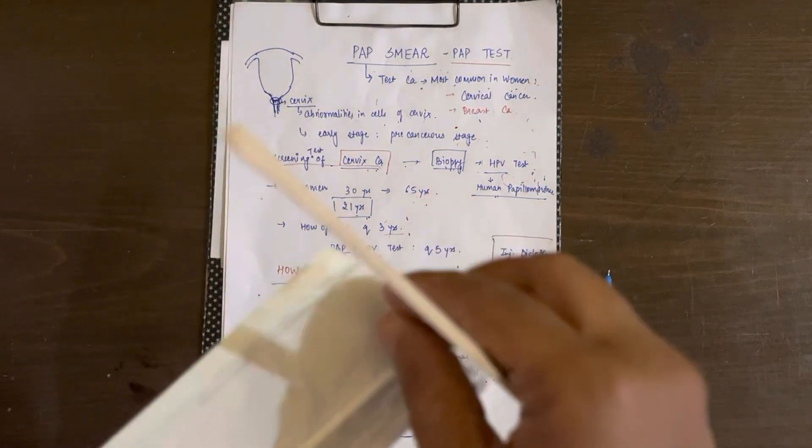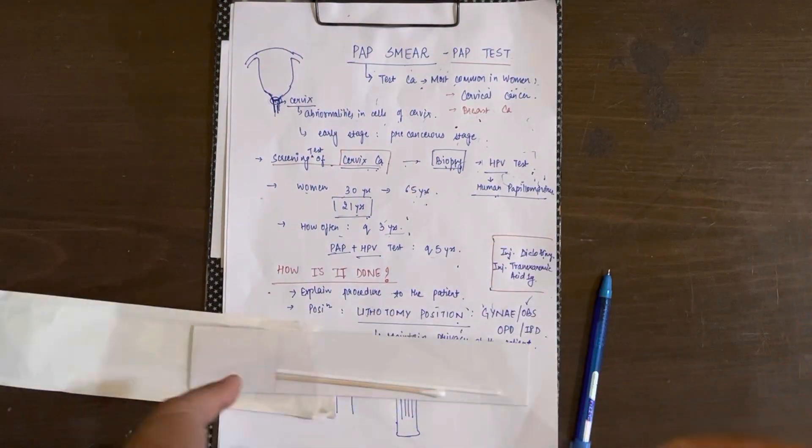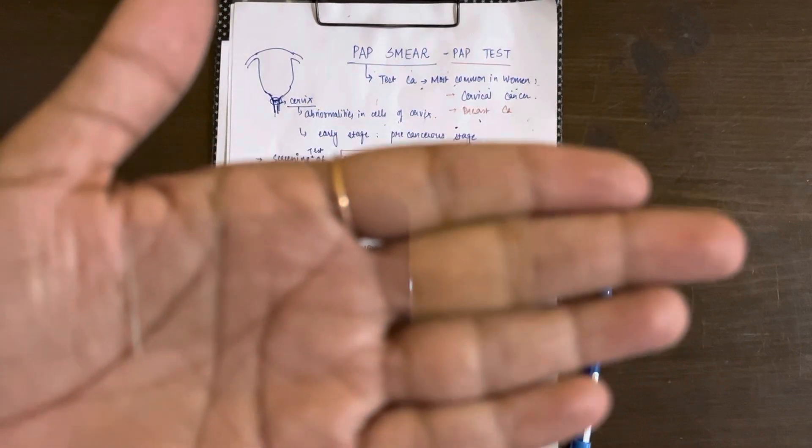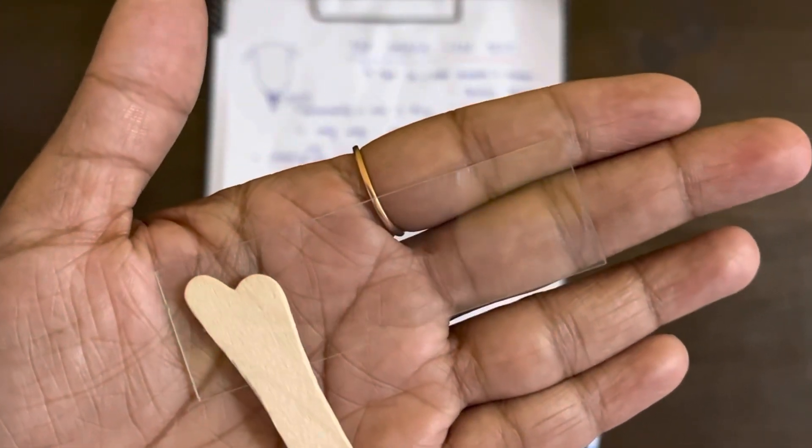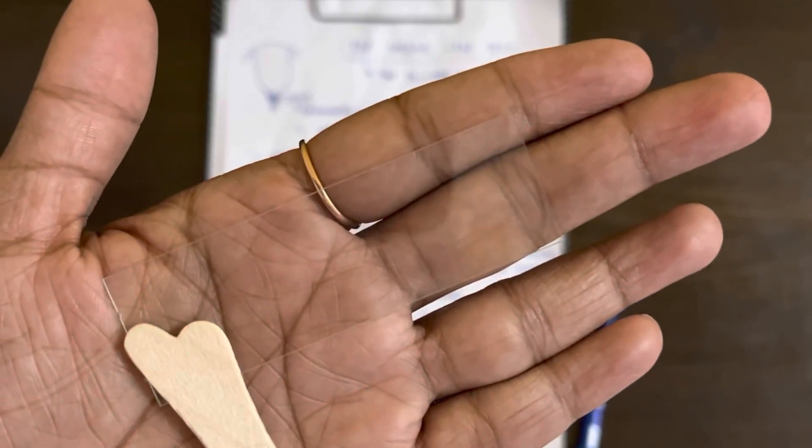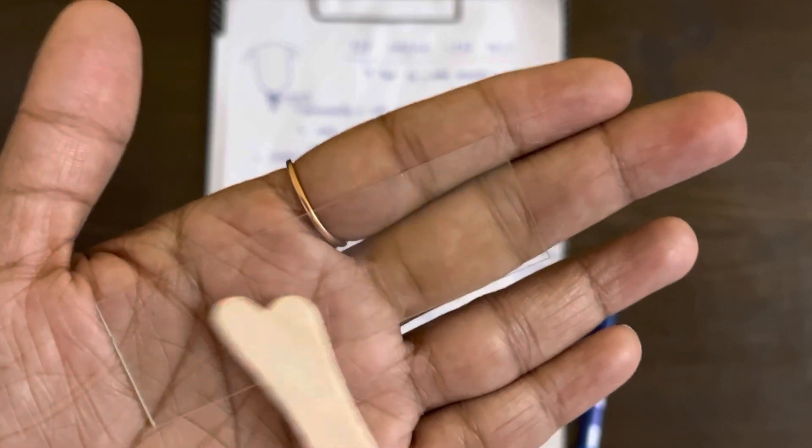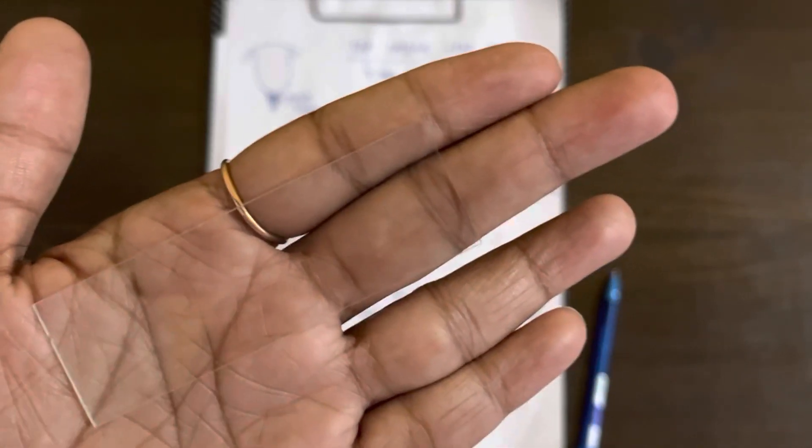Once you take the sample on the IRS spatula, you need to take your slide. This is the slide provided with the kit. You have to rub your IRS spatula against this slide to make the cells set on the slide. This is the way you use the IRS spatula.